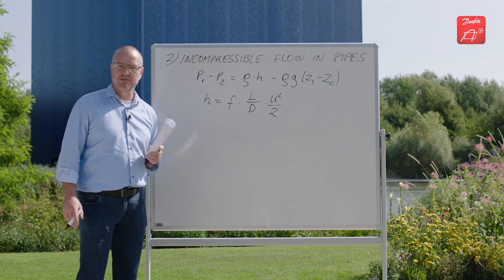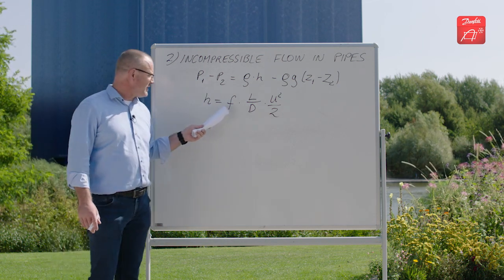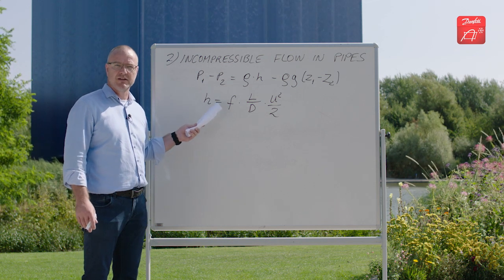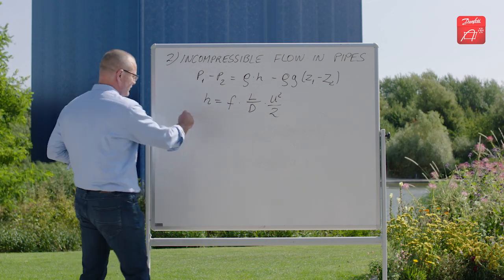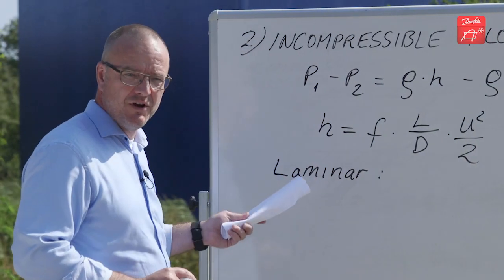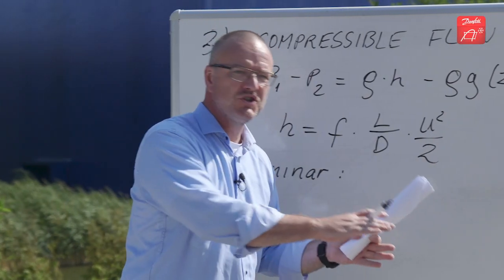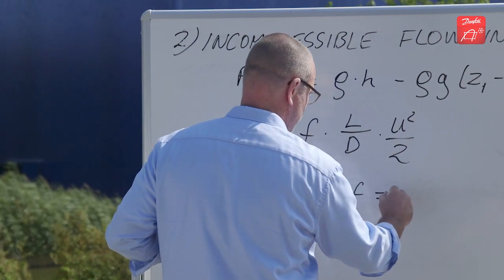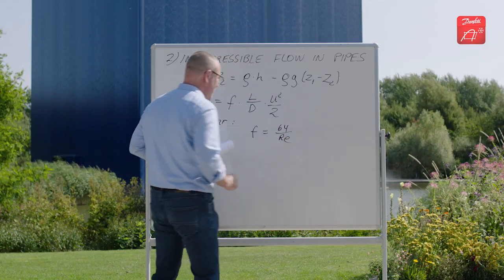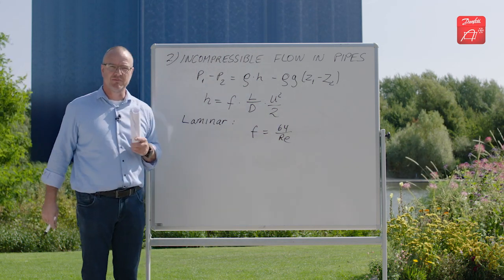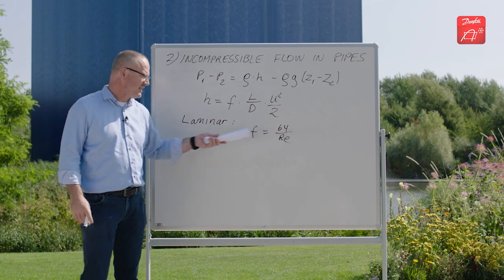When you look at incompressible flow you have two different equations for the friction factor depending on the Reynolds number of the flow. If you have laminar flow, that is flow that is smooth and straight, the friction factor can be expressed as 64 divided by the Reynolds number. That is quite simple.